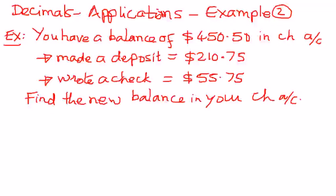Let's say you have a checking account in a bank, and you have a balance in your checking account equal to $450.50. There are two transactions which happen in your checking account. You made a deposit of $210.75 on a particular day, and then on another day, you wrote out a check for $55.75 from your checking account.